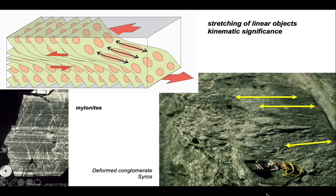At high strain, the foliation becomes intensely developed, creating a rock called a mylonite as in the photograph here. At that stage, the foliation is pretty much parallel to the shear plane.